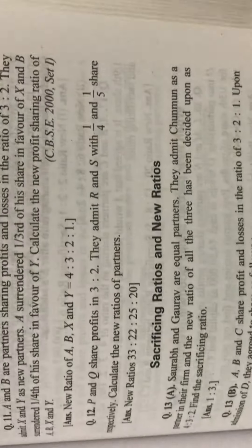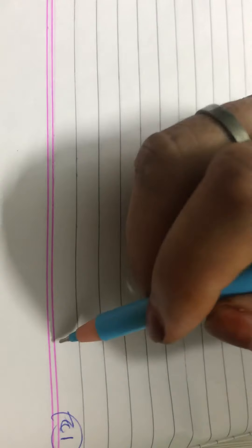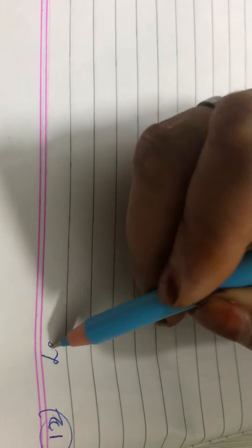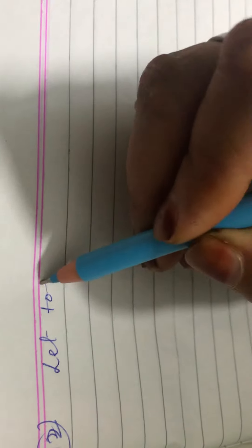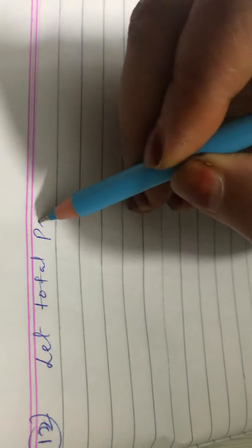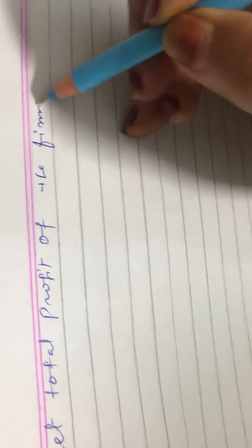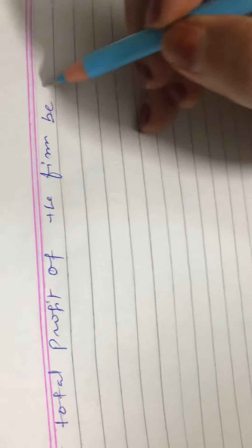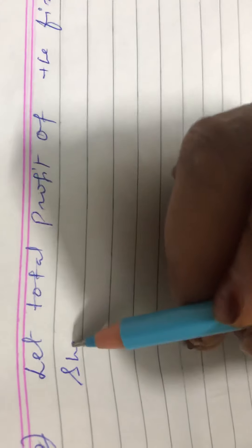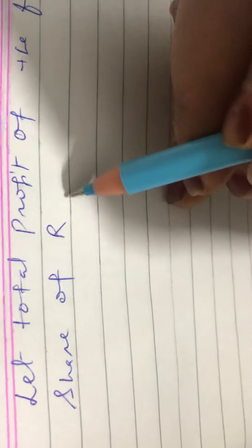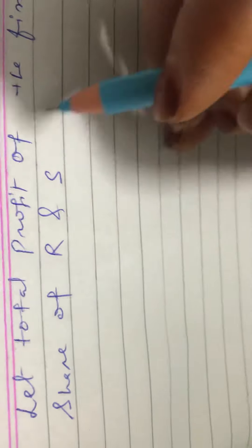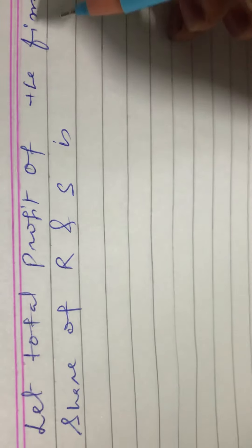Let sum number 12. Let our total profits of the firm be 1. So share of R and S is how much? 1/4th and 1/5th given in the question.